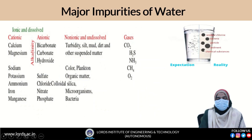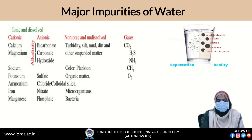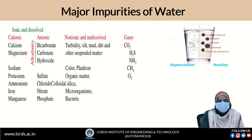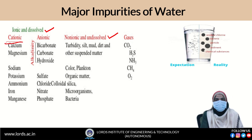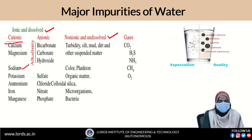Now moving towards the different types of impurities of water. Whatever water we are using for domestic, drinking, or industrial purpose is not in pure form. The impurities can be classified into two categories: the first one is ionic and dissolved impurities. The ionic impurities in the form of cations are mostly calcium Ca²⁺, magnesium Mg²⁺, sodium Na⁺, potassium K⁺, ammonium NH₄⁺, iron Fe²⁺ or Fe³⁺, and manganese.